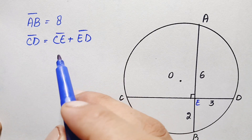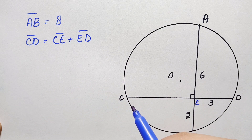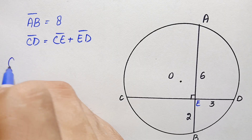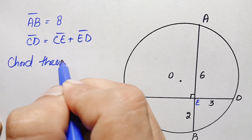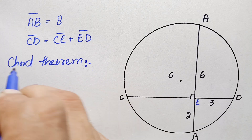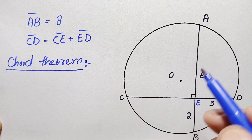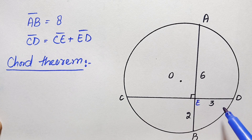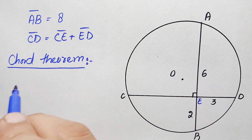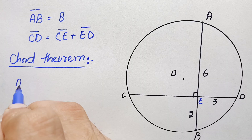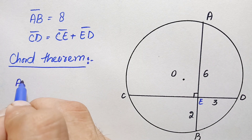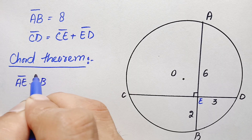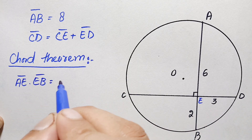To find out the value of CE, we will use the chord theorem. The chord theorem states that the product of two segments of one chord will be equal to the product of two segments of the second chord. Therefore, from here we can write: AE times EB will be equal to CE times ED.